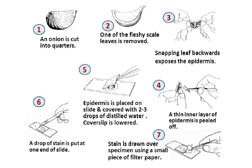To make a slide: an onion is cut into quarters, one fleshy scale leaf is removed, snapping the leaf backwards exposes the epidermis, and a thin layer of epidermis is peeled off using tweezers or forceps. The epidermis is placed on a slide and covered with two to three drops of distilled water. A cover slip is lowered, then a drop of stain — methylene blue or iodine solution — is placed at one end of the slide and drawn over the specimen using filter paper.